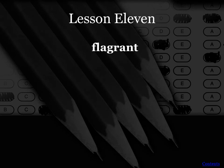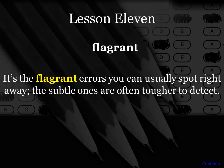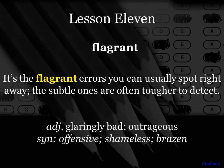Our next word is flagrant — kind of similar to blatant, which we had last week, and again it's an adjective. Flagrant errors are ones you can usually spot right away; the subtle ones are often tougher to detect. So here we have our opposite context clue — the opposite of flagrant is subtle. If something is subtle, it's hard to detect; flagrant, though, is very obvious. In fact, it's glaringly bad and outrageous. A synonym would be offensive, shameless, or brazen.